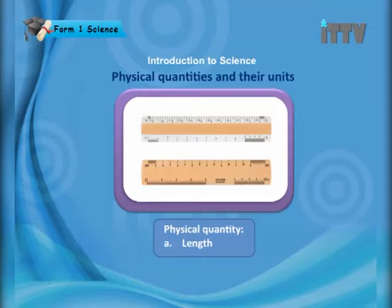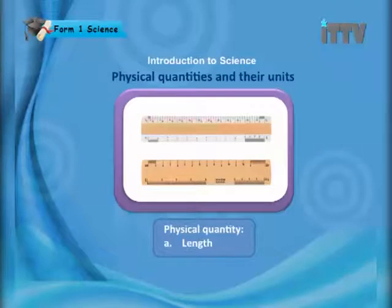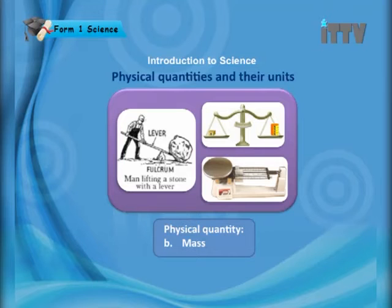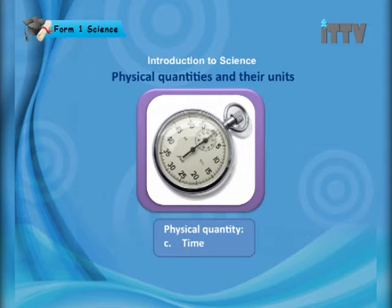What is a physical quantity? It's actually a quantity that can be measured. An example of a physical quantity is length. You use a ruler to measure length. Next, the physical quantity is mass. After that is time — so remember: length, mass, and time.